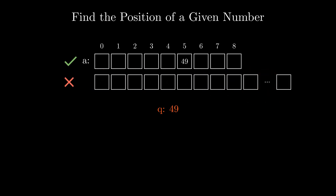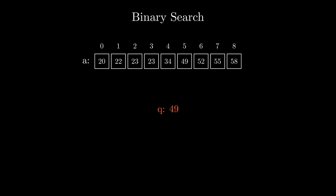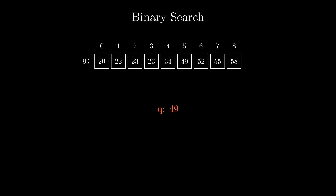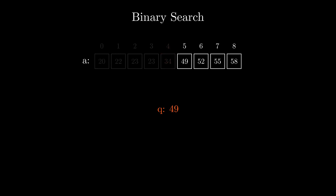Instead, because we know that the initial array is sorted, we can split the array into two equal parts and throw away the one that we know doesn't contain the query number. So we will look at the middle element of the array and compare it to the query number. If the middle element is smaller than the query number, we will throw away the whole left part of the array, as we know for sure the element we're searching for can't be in the left part.